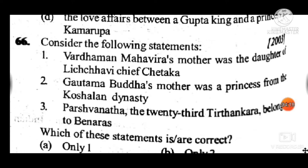Question 65: Mrichchhakatika (Mricchhakatika), an ancient Indian book written by Shudraka, deals with — answer is A, the love affair of a rich merchant with the daughter of a courtesan. Question 66: Consider statements about Mahavira's mother (daughter of a Lichchhavi chieftain), Gautama Buddha's mother (a princess from the Kosala dynasty), and Parshvanatha being the 23rd Tirthankara from Varanasi. Answer is C — two and three are correct; the first is incorrect.